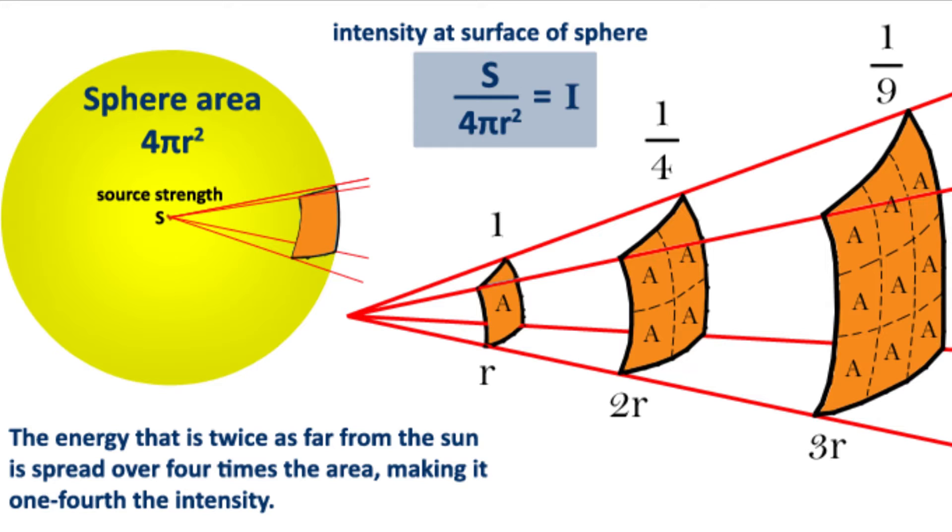The same amount of energy is fluxing throughout R, 2R and 3R, but due to the inverse square law, energy which is at 2R is spread out across 4 times the area, making it 1 fourth the intensity of R and not half which many people believe.